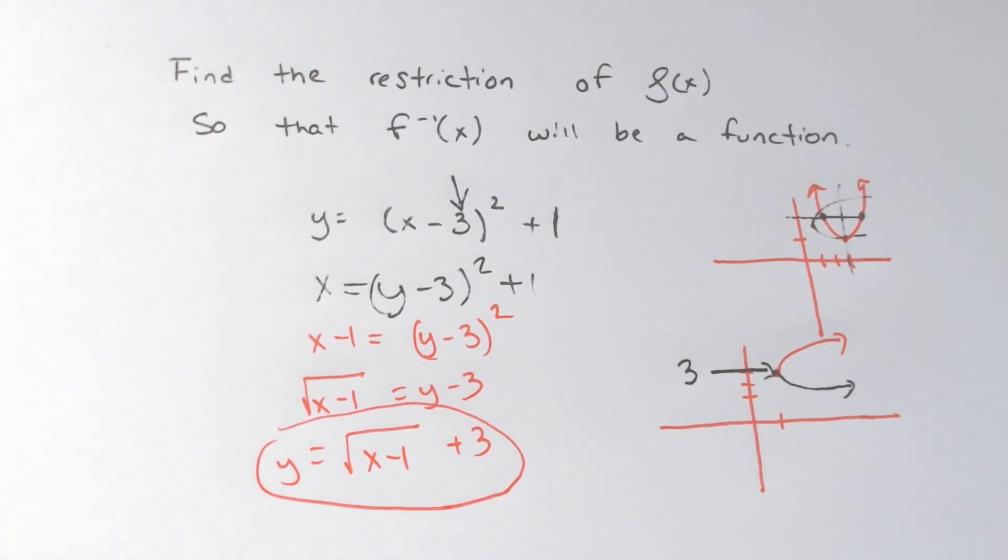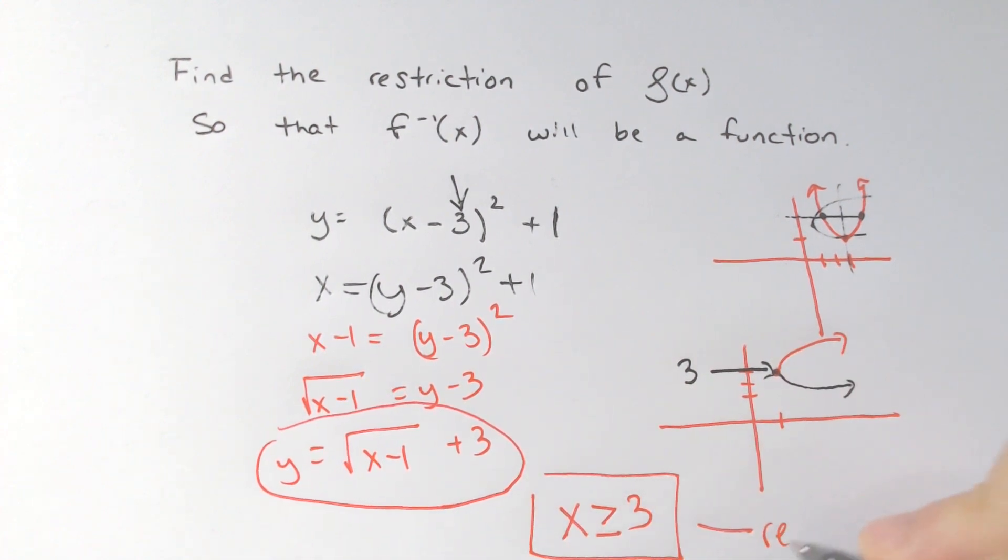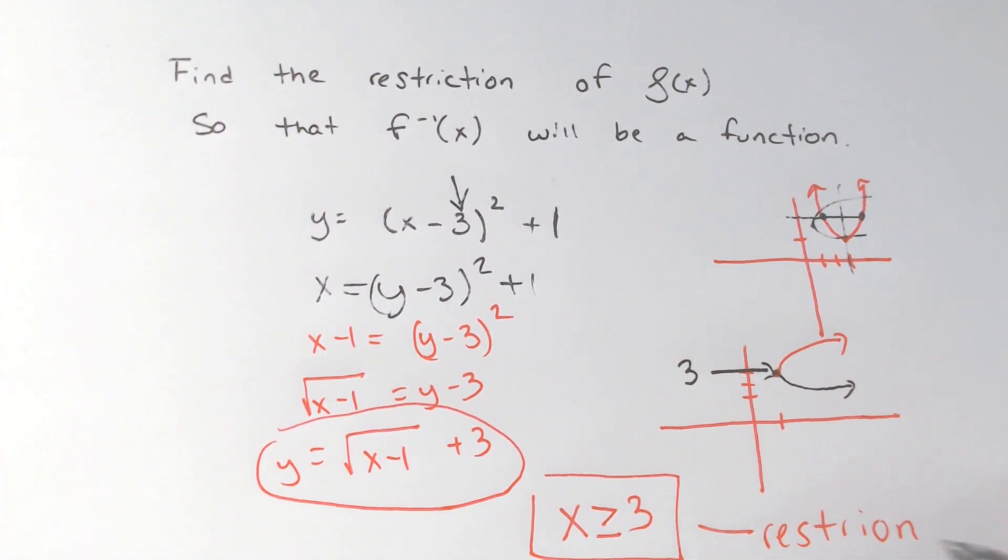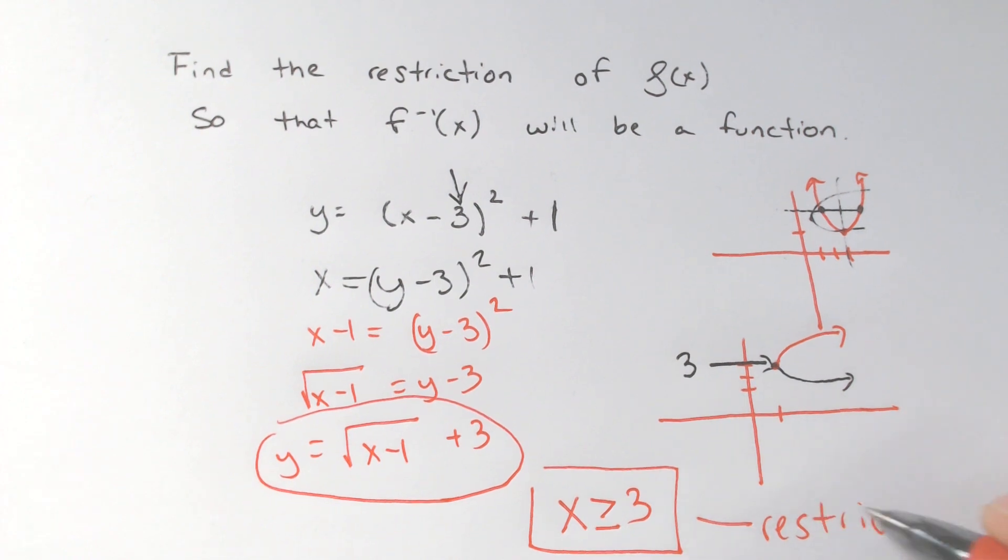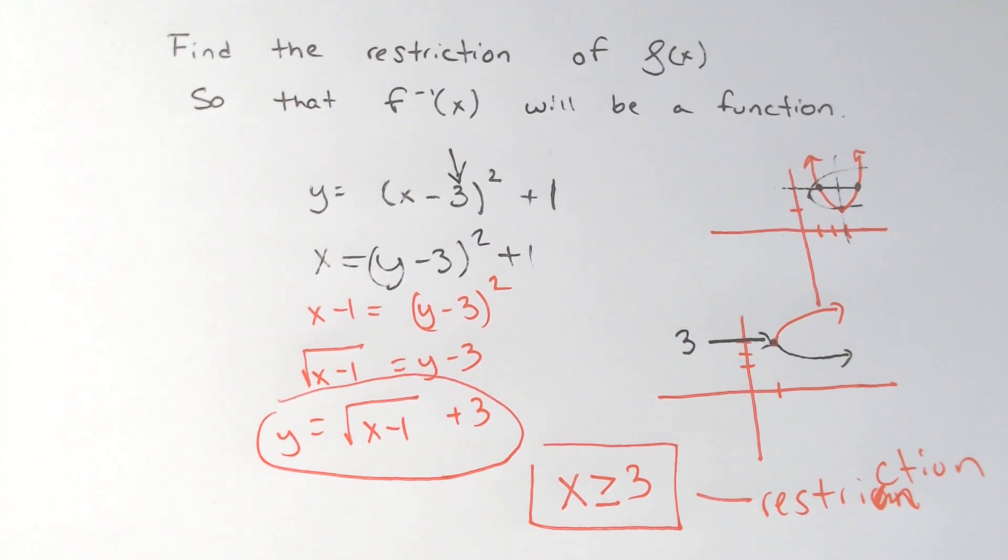So restricting the domain typically means the positive ones, which would be x has to be greater than or equal to 3. That would be the restriction of the domain of the original.